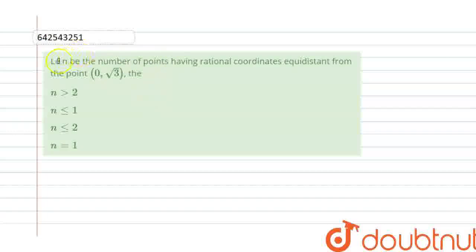Hello everyone, so the question is: let N be the number of points having rational coordinates equidistant from point (0, √3). Then, we are having four options. We have to calculate the answer and find which of the following options is the correct option.